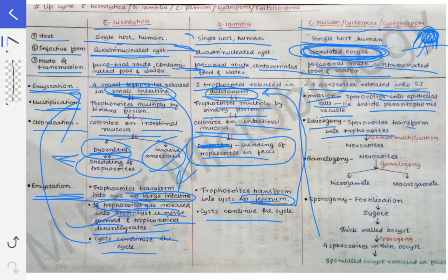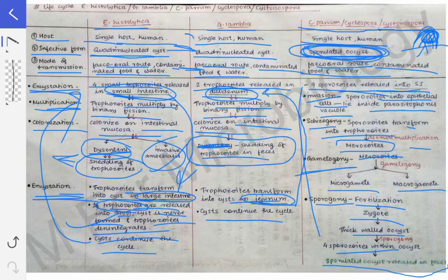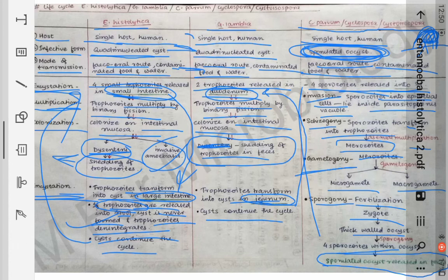Then there occurs schizogony, in which the sporozoids transform into trophozoites — the sporozoid shape changes into a trophozoite — and then asexual multiplication occurs with formation of merozoites. Then occurs gametogony, in which merozoites are converted into microgametes or macrogametes. The next step is sporogony, where fertilization occurs between the micro and macrogametes, a zygote is formed, and a thick-walled oocyst is formed.